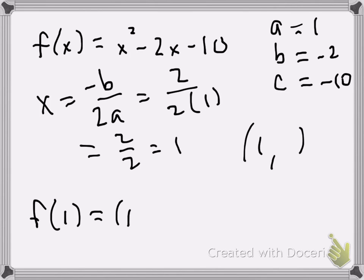So all my x's are going to get replaced with 1's. And then we're just going to work it out. So that's 1 minus 2 minus 10, which is negative 11.